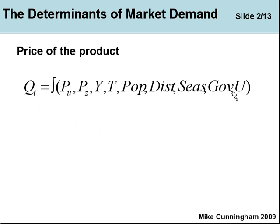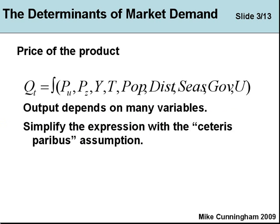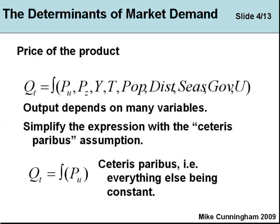Each one of these variables helps to explain the demand for goods. Demand depends on many variables, and what we do is simplify this using the assumption of ceteris paribus. How ceteris paribus works is we take, instead of this long expression — QT depends on price per unit, price of alternatives, income, taste, and so on — we simply say: quantity demanded per unit of time depends on the price per unit, ceteris paribus.